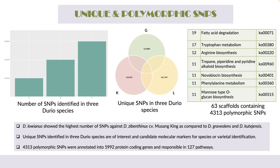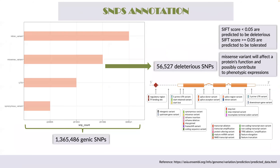For the unique SNPs, the numbers are quite similar across species. The unique SNPs are of interest because they can be candidate molecular markers for species or varietal identification. We also analysed about 4,000 polymorphic SNPs, which are SNPs with more than two alleles, also useful for species or varietal identification. These polymorphic SNPs were mapped to 5k protein-coding genes, and we found that 5,992 protein-coding genes are responsible in various pathways, including fatty acid, phenylalanine metabolism, and novobiocin biosynthesis.